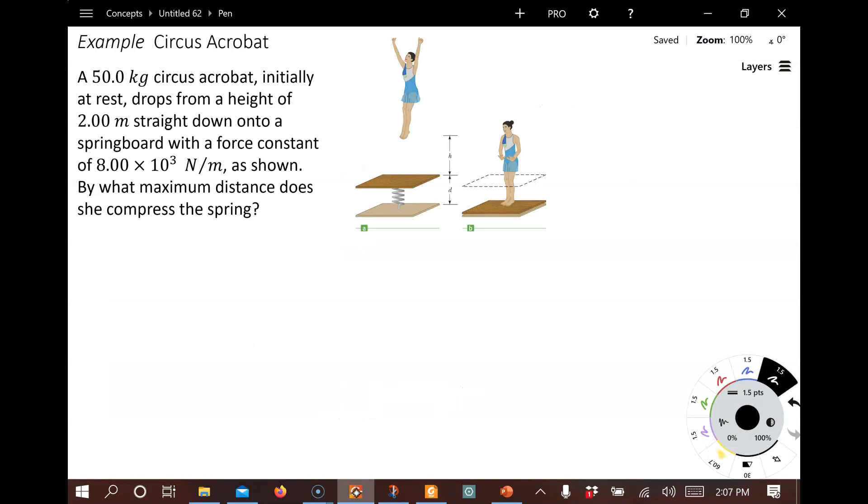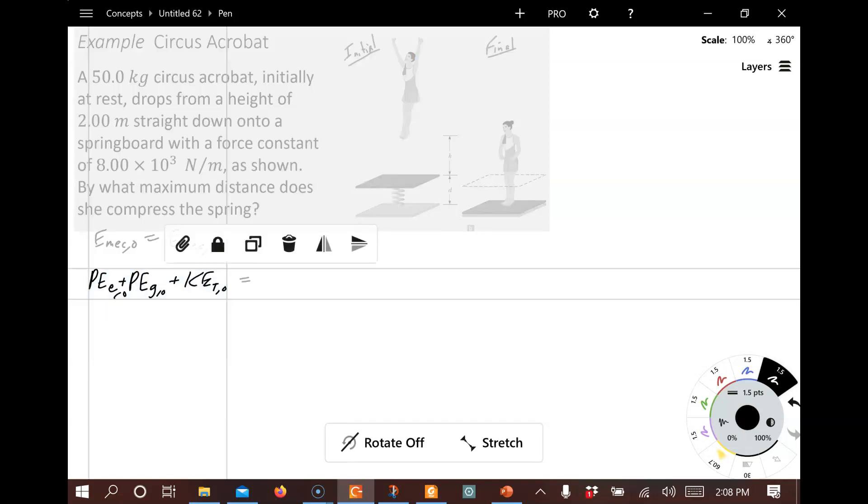This is the initial situation here in figure A. And this is the final situation here in figure B. And so we're going to relate Emech initial equals Emech final. And again, we said that we have PE for the spring, PE for gravity. These are both initial. And we've got translational kinetic energy. And we've got the same two things for the final situation as well.